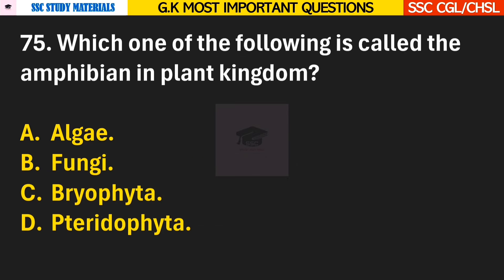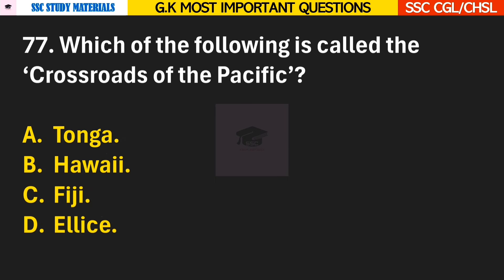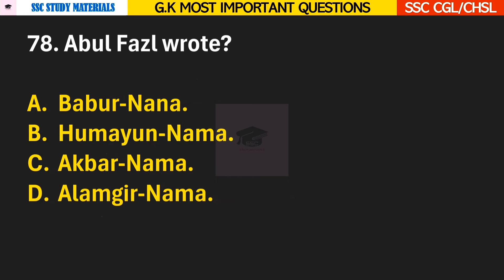Question 75: Which one of the following is called the amphibian of the plant kingdom? Answer C — Bryophyta. Question 76: How many states in India are coastal? Answer D — 9. Question 77: Which of the following is called the crossroads of the Pacific? Answer B — Hawaii. Question 78: Abul Fazl wrote? Answer C — Akbarnama.